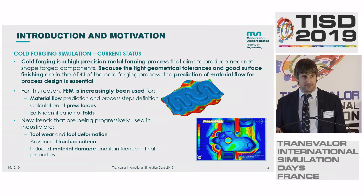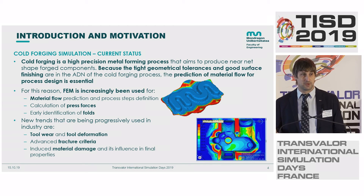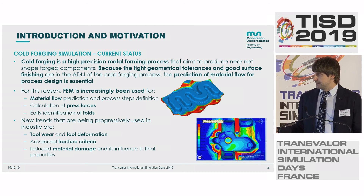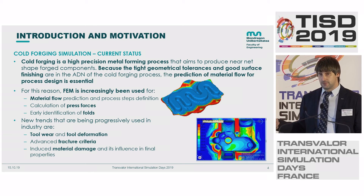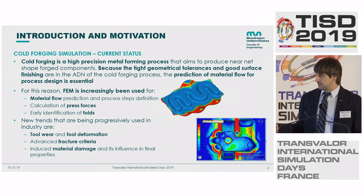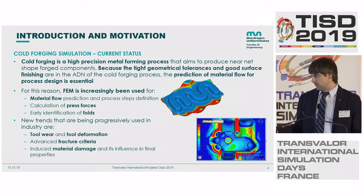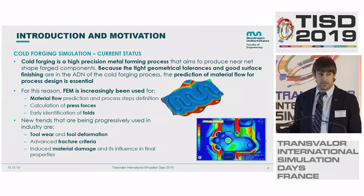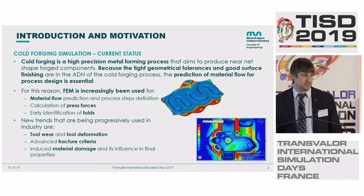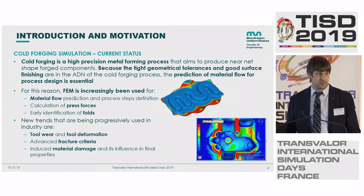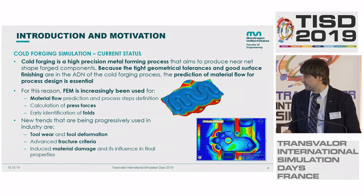Simulation is becoming crucial in industry. Conventional outputs are material flow, press forces, and faults, but other outputs like tool wear, tool deformation, fracture criteria, and material damage are not fully implemented in industry for cold forging.